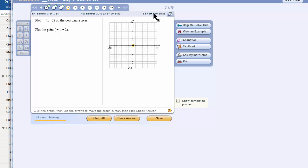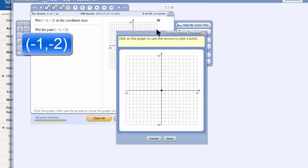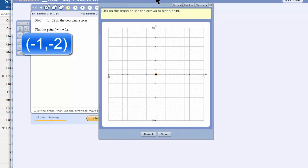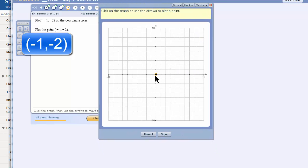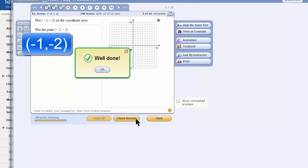So I will drag and drop after I make this bigger. I will drag and drop this point to the left, 1, and then down, 2. And that lines up with negative 1 on the x-axis and negative 2 on the y-axis. I save and I check answer.